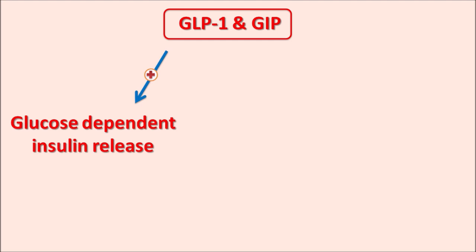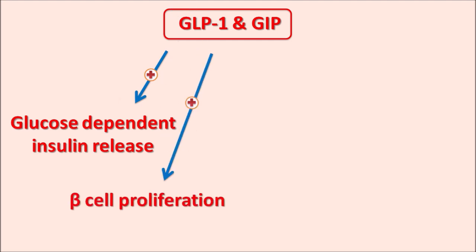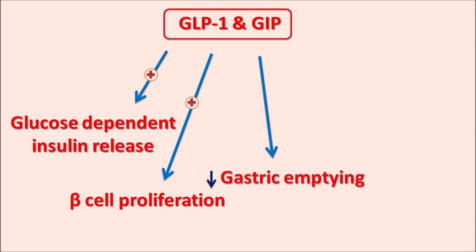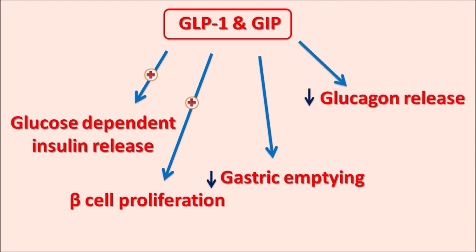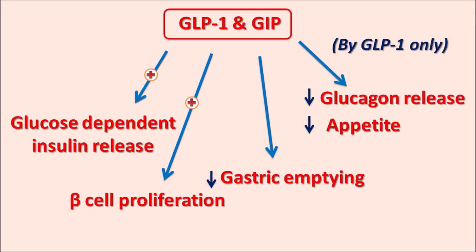Incretins also promote beta cell proliferation, which further increases insulin release, decrease gastric emptying to reduce appetite, and reduce glucagon release. By inhibiting glucagon release — an action mainly shown by GLP-1 — hepatic glucose production is also reduced. In this way, incretin hormones control glucose levels through multiple mechanisms.